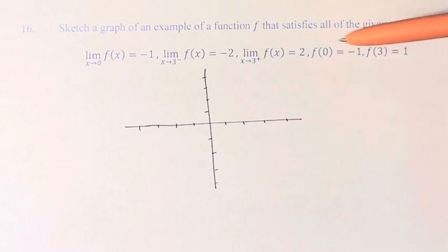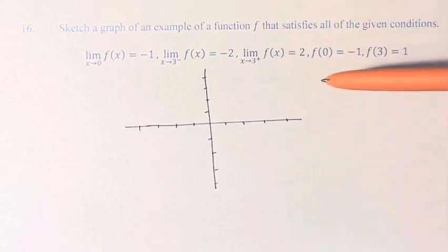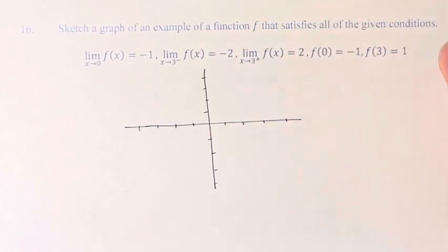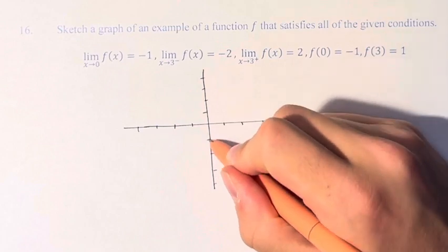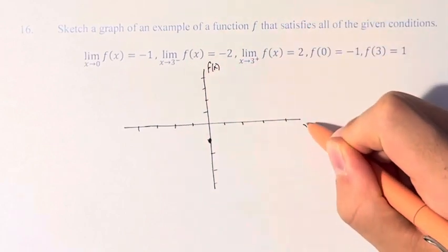So we have these three limits and these two values of the function at certain points. So let's do the points first. So f of 0 equals negative 1. That means at x equals 0, the value of the function is at negative 1, where we have f of x on the y-axis and x on the x-axis.